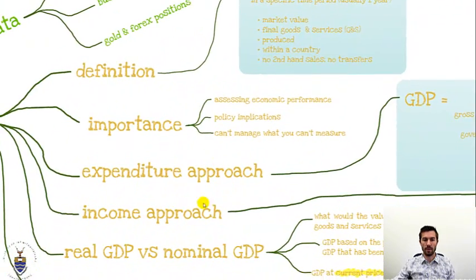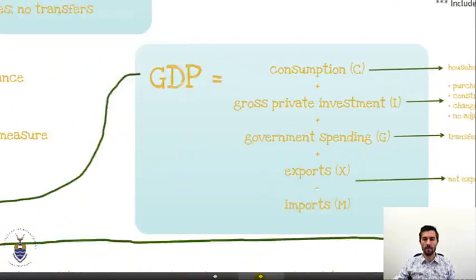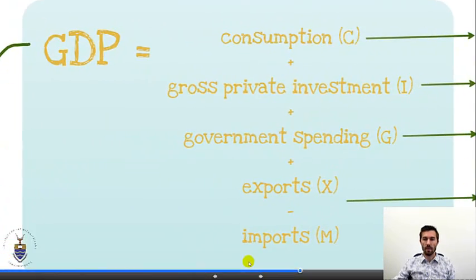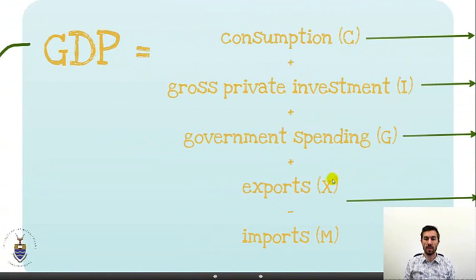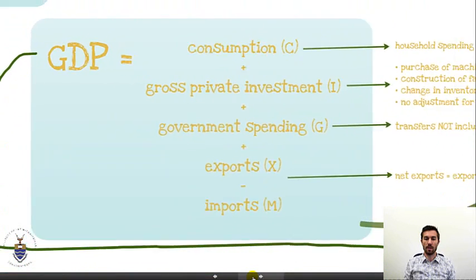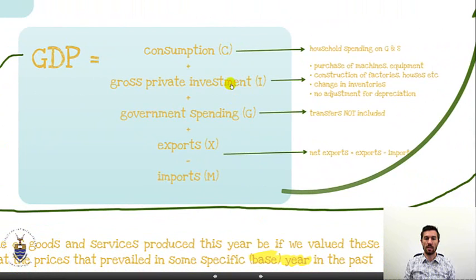Let's look at the expenditure approach. The expenditure approach says that we measure GDP in terms of all the different types of spending: household spending, consumption, investment, government spending, exports and imports. Let's look at those in a bit more detail.